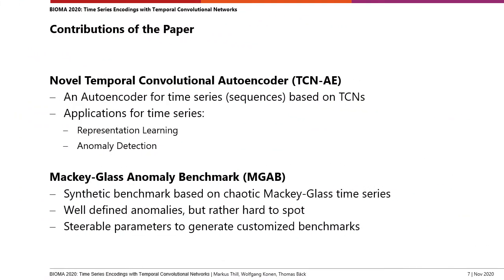The contributions of our paper are twofold. First, we present our temporal convolutional autoencoder, a sequential architecture that can be used for time series representation learning or anomaly detection. Second, we introduce our Mackey-Glass anomaly benchmark, a synthetic benchmark based on Mackey-Glass time series that is non-trivial and contains well-defined anomalies which are hard to spot for the human eye and also for some algorithms.